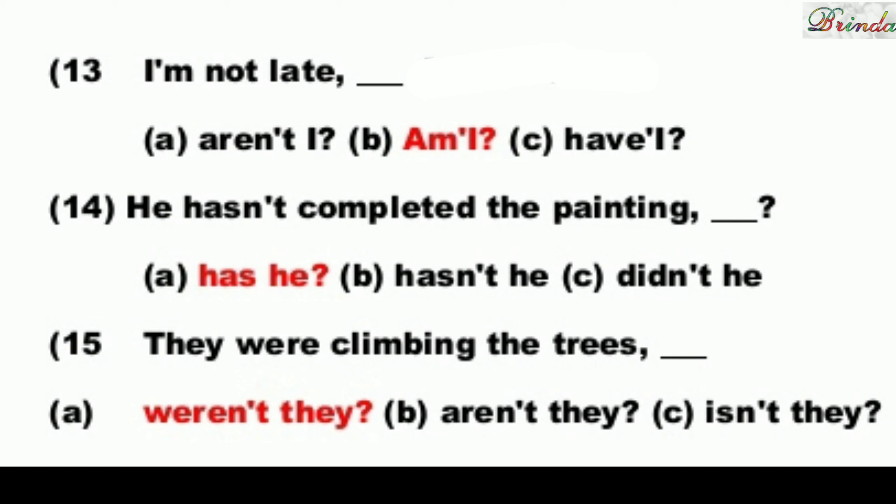Next: They were climbing the trees. Turn to the opposite — They weren't climbing the trees — so the tag is 'weren't'. Options: weren't they, aren't they, isn't they. The answer is: weren't they?